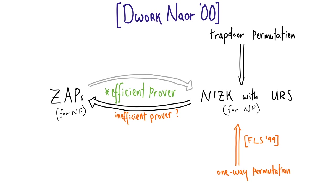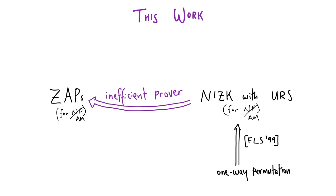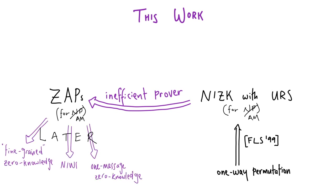What we are interested in is whether we can show a similar transformation from NIZK to ZAP with an inefficient prover — and that is indeed what we do. As a consequence, we get ZAPs from one-way permutations with inefficient provers, but still non-trivial. We have a variety of applications: zero-knowledge-type proofs with very limited interaction, non-interactive witness indistinguishability, one-message zero knowledge, and a new notion we call fine-grained zero knowledge.